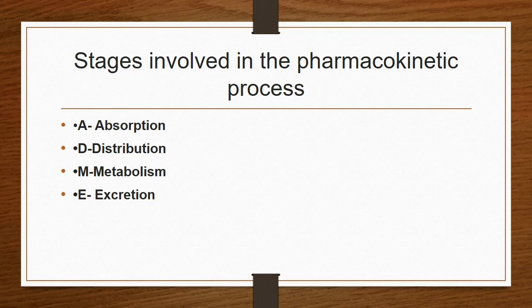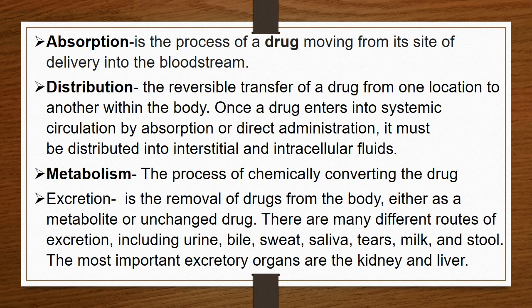What are the stages involved in the pharmacokinetic process? The process involves absorption, distribution, metabolism, and excretion — what we call ADME. Absorption is the process of a drug moving from a site of delivery into the bloodstream. Distribution is the reversible transfer of a drug from one location to another within the body — once the drug enters systemic circulation, it must be distributed into interstitial and intracellular fluids. Metabolism is the process of chemically converting the drug. Excretion is the removal of the drug from the body either as a metabolite or unchanged drug.